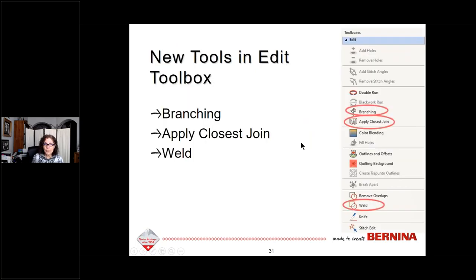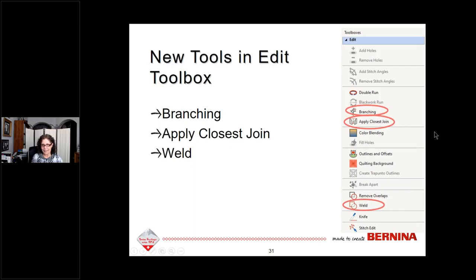There are some new tools in the edit toolbox — some of the best new tools are here. We have Branching, Apply Closest Join, and Weld. I'll be talking about each of those in a bit. Next, we'll look at all the new features in alphabetical order.